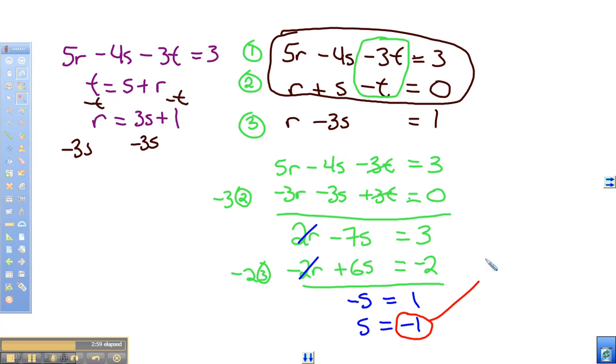3 times a negative 1 is going to equal 1. So R plus 3 equals 1. Subtracting 3 from both sides, we get R is equal to negative 2.